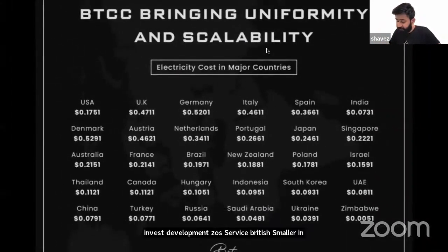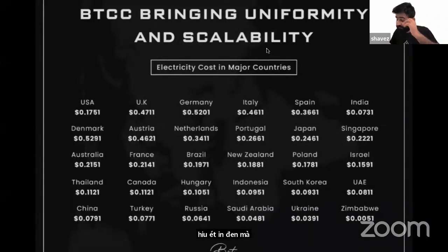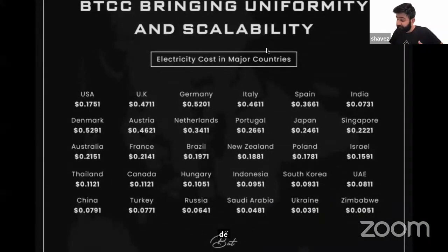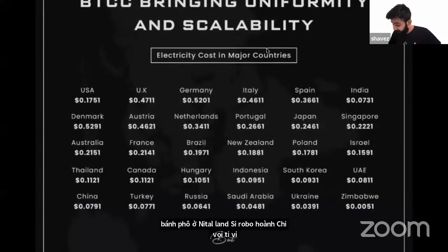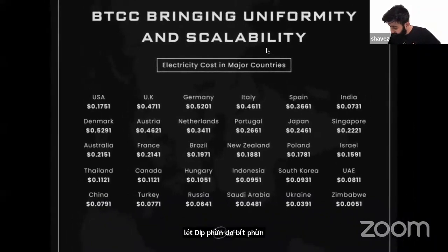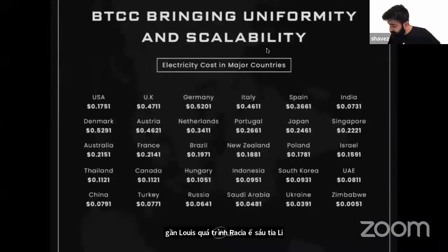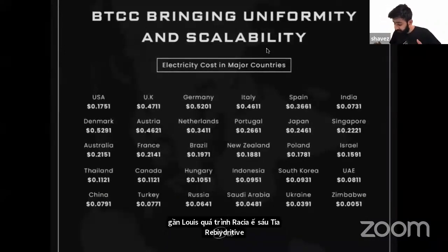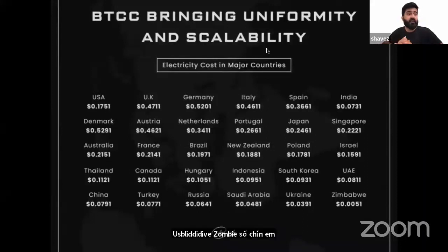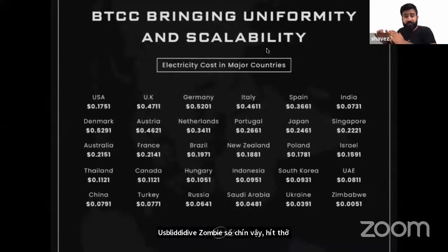In Denmark it is $0.50. In Australia it's $0.40. Netherlands, $0.30. Portugal, Japan, Singapore — all different. Can you spot the lowest? Russia, Saudi Arabia — it's very cheap. Ukraine, it's very cheap. Zimbabwe, it's so cheap. And this is how it is — it is variable.